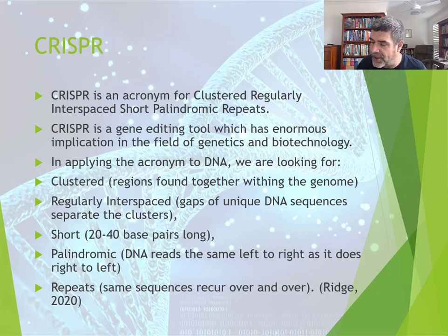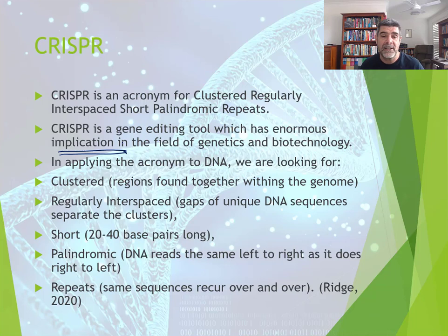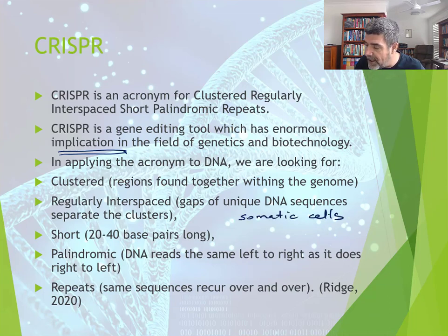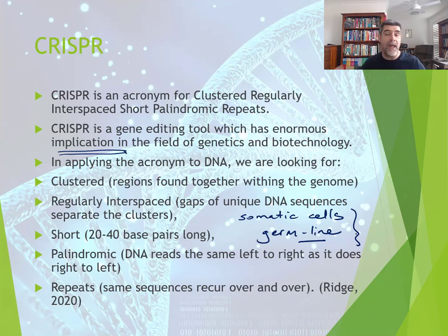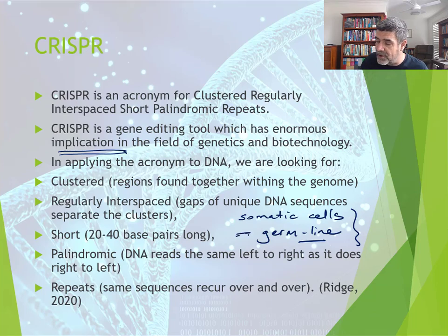The implications — and that's why we're talking about it here in the future uses of technology — are massive. One of the important things we need to distinguish when looking at these applications of CRISPR is the difference between changes in somatic cells and changes in the germline. We've already looked at the consequences of both of these types of change to DNA — what that means for the individual and for subsequent generations. Interestingly, CRISPR is already starting to be used in some germline applications, and that means we just don't know what the ultimate result of some of these changes will be.